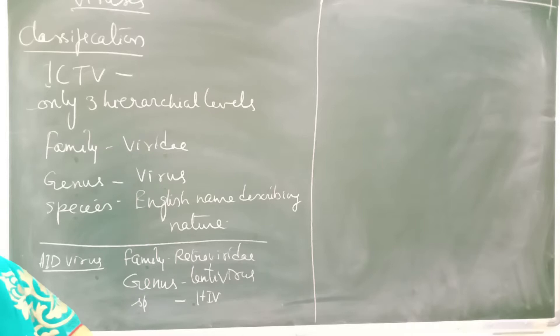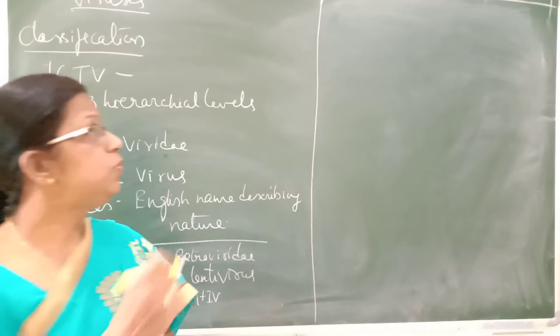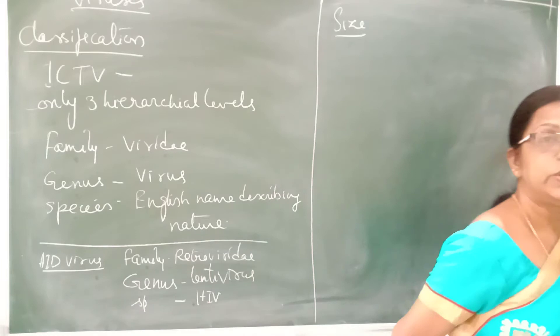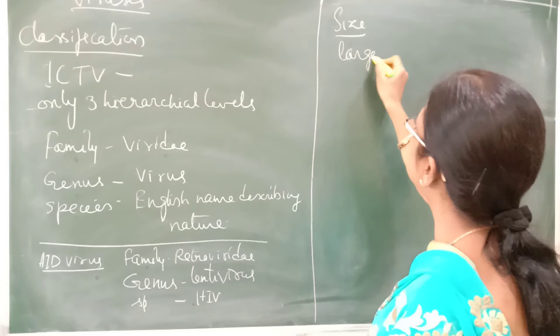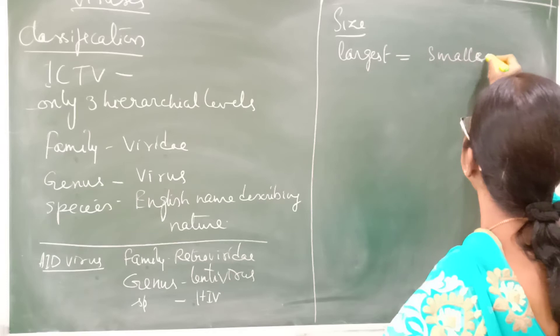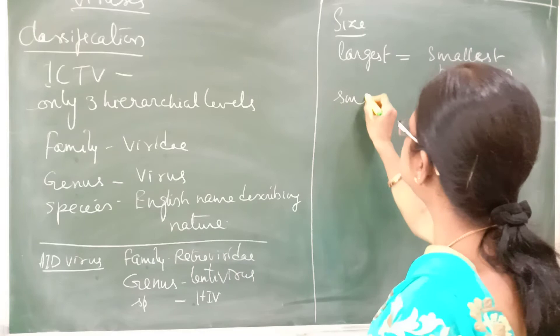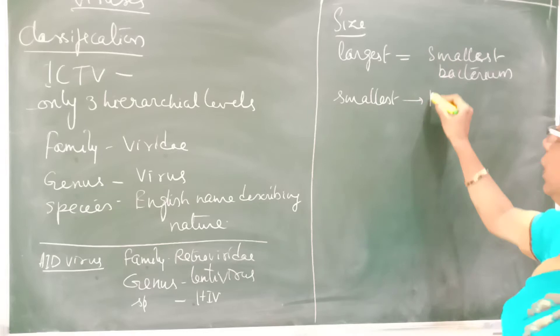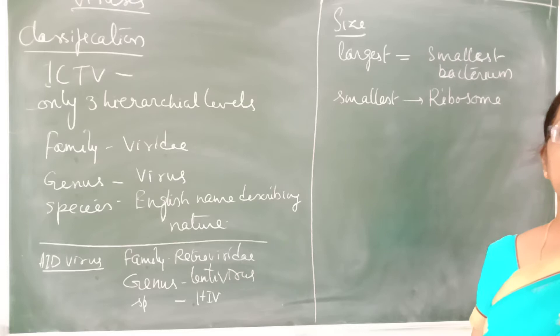Next, let us look at the structure and symmetry of viruses. The size of viruses varies according to their type. The largest virus is equal in size to the smallest bacterium, which is Mycoplasma. The smallest virus is equal to the size of a ribosome. Viruses are measured in nanometers, while bacteria are measured in microns.